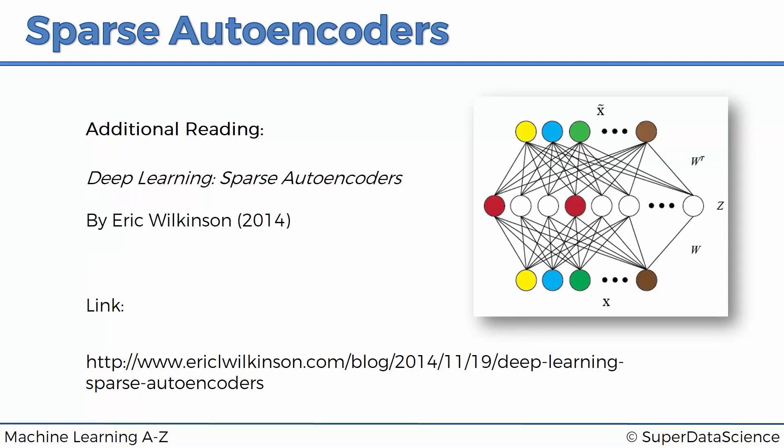The next one is called Deep Learning Sparse Autoencoders by Eric Wilkinson. It's a very short blog post on the essence of sparse autoencoders. It's literally like a five to ten minute read and just another gentle introduction to the world of sparse autoencoders.